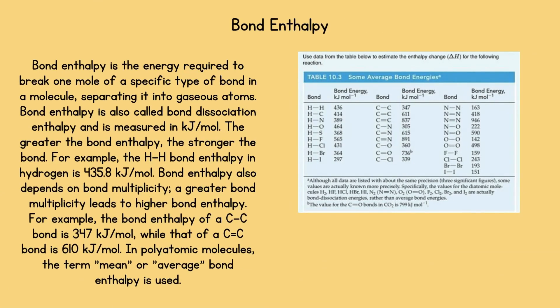Bond enthalpy. Bond enthalpy is the energy required to break one mole of a specific type of bond in a molecule, separating it into gaseous atoms. Bond enthalpy is also called bond dissociation enthalpy and is measured in kilojoules per mole. The greater the bond enthalpy, the stronger the bond. For example, the H-H bond enthalpy in hydrogen is 435.8 kilojoules per mole. Bond enthalpy also depends on bond multiplicity. A greater bond multiplicity leads to higher bond enthalpy. For example, the bond enthalpy of a C-C bond is 347 kilojoules per mole while that of a C=C bond is 610 kilojoules per mole. In polyatomic molecules, the term mean or average bond enthalpy is used.